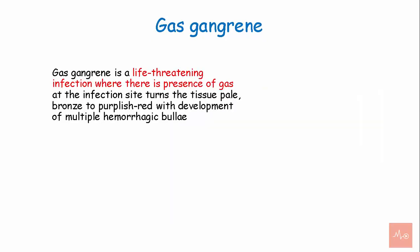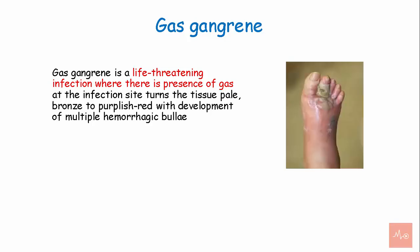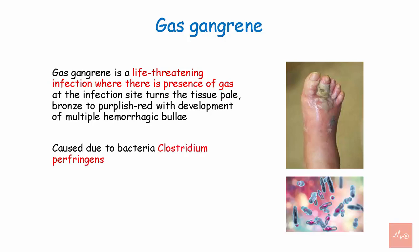Gas gangrene is a life-threatening infection where there is a presence of gas at the infection site that turns the tissue pale. It looks bronze to purplish red with development of multiple hemorrhagic bullae. It is caused by a bacteria known as Clostridium perfringens. Radical amputation is the best treatment for gas gangrene.